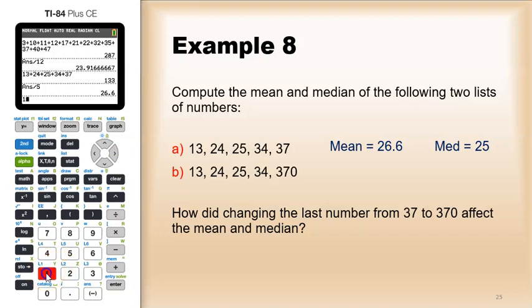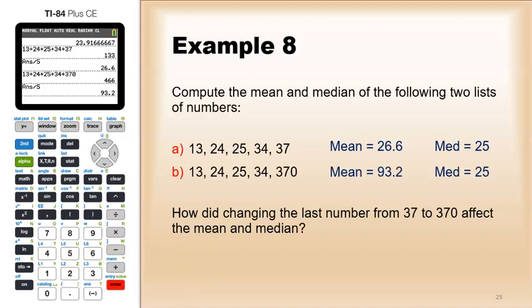For the next data set, you can see the mean is a lot higher, but the median is basically the same. So in terms of how changing that last number affected the mean and median, changing from 37 to 370 had a big impact on the mean, a huge impact, but had no effect at all on the median.